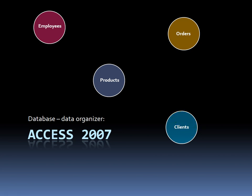Now, Microsoft Access is what is called a relational database. A relational database means that these tables can relate to each other. When you have a filing cabinet and you have information on your employees, your products, the orders they made, and also the clients — do you dump them all in one filing cabinet or all into one folder?